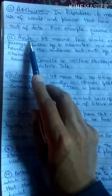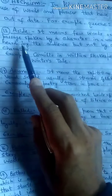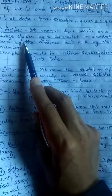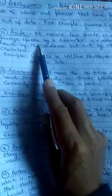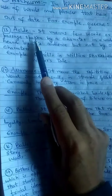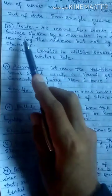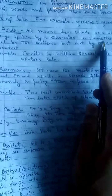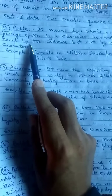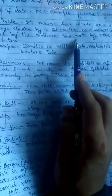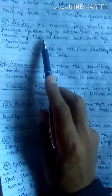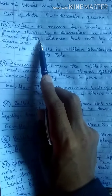The thirteenth literary term is 'aside.' Aside means a few words or a short passage spoken by a character in an undertone heard by the audience, but not by other characters. The audience can hear it, but the other characters cannot.